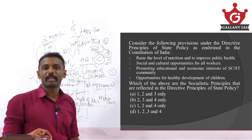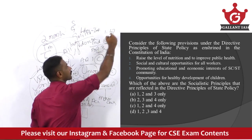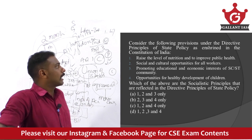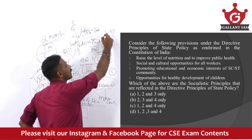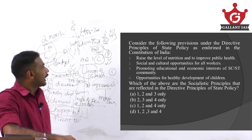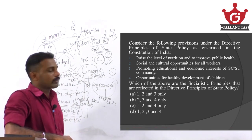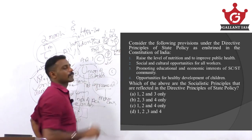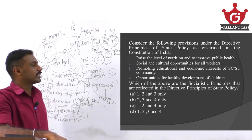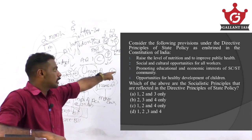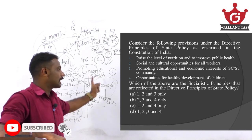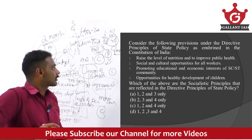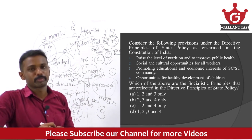To raise the level of nutrition and improve public health — this is Article 47 — is a socialist principle. Social and cultural opportunities for all workers comes under Article 43 — that is also a socialist principle. Promoting educational and economic interest of SC/ST community comes under Article 46 and reflects Gandhian ideologies, so statement 3 should not be in the answer. We can eliminate options A, B, and D, and directly reach the answer: option C — statements 1, 2, and 4. Healthy development of children also comes under socialist principles.